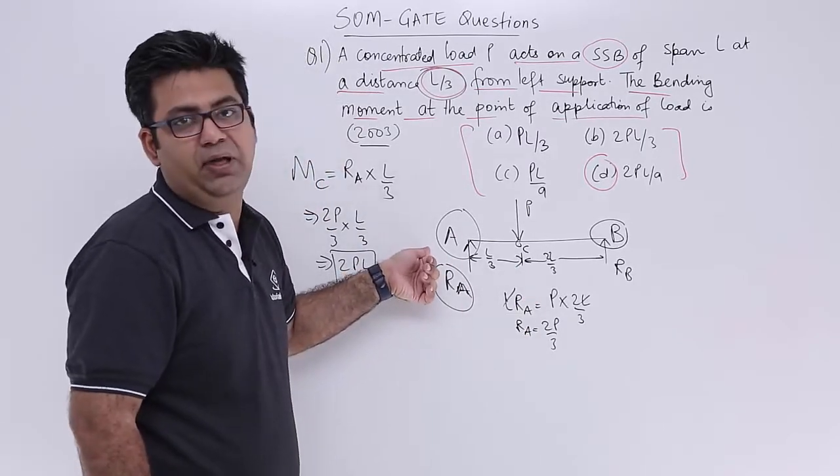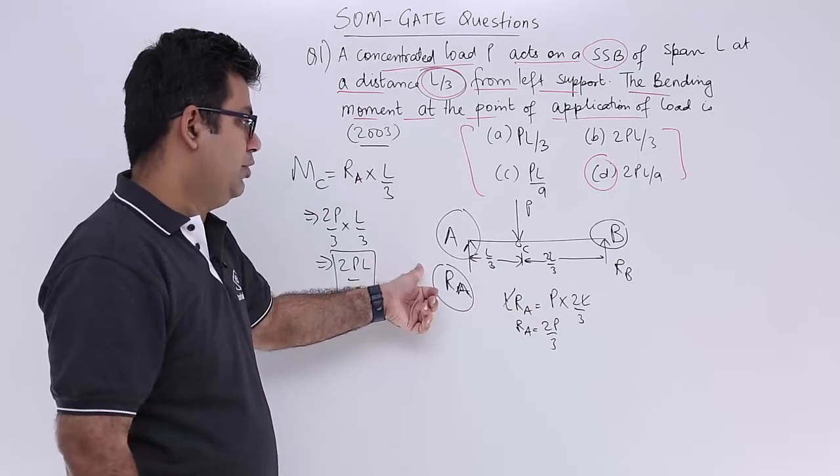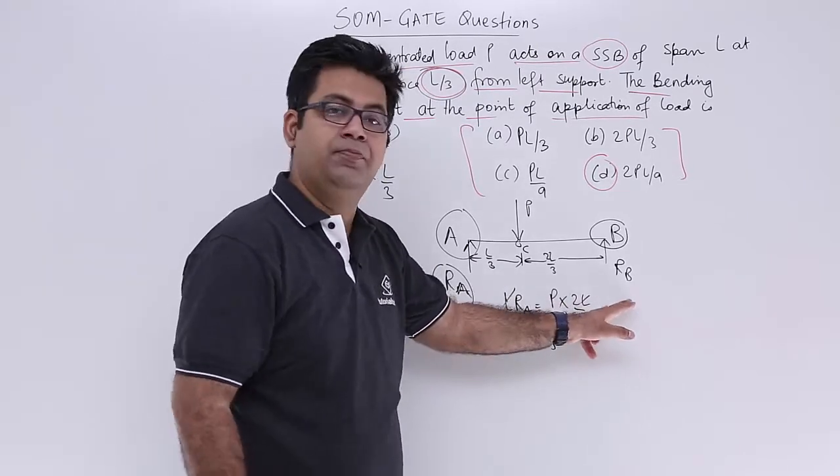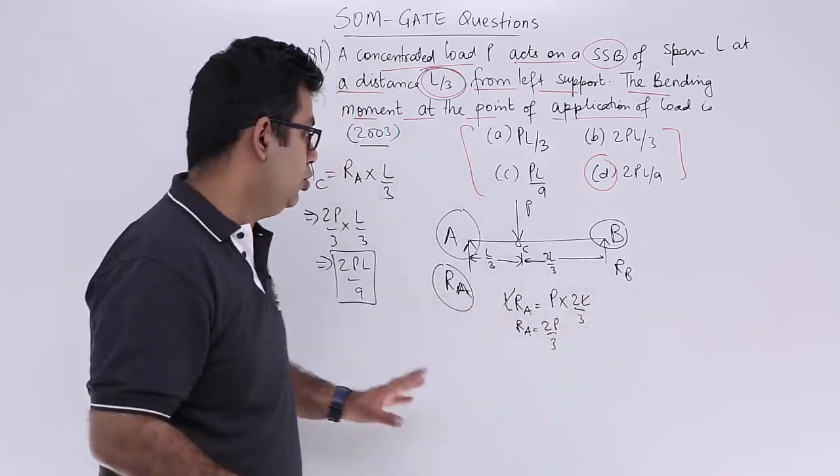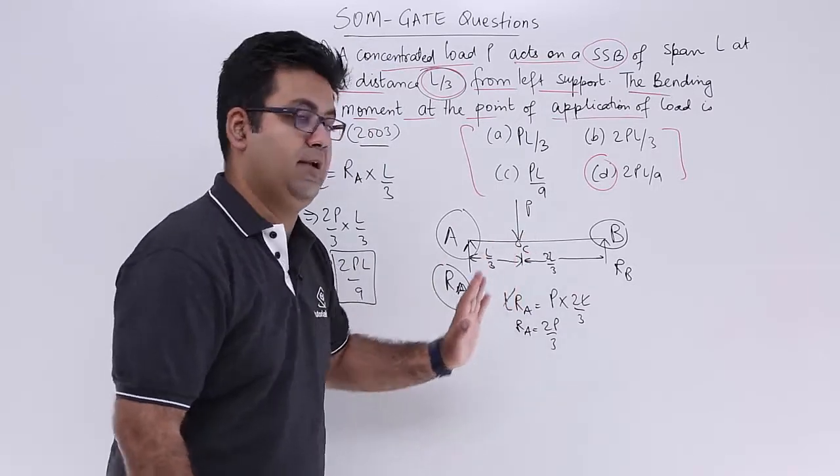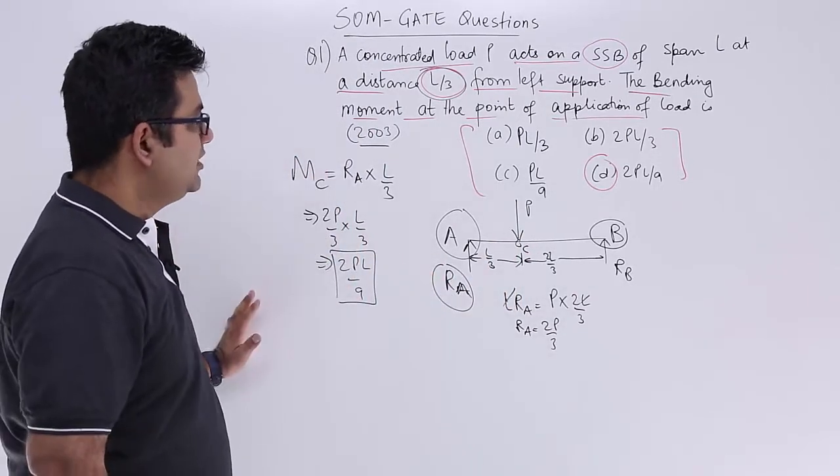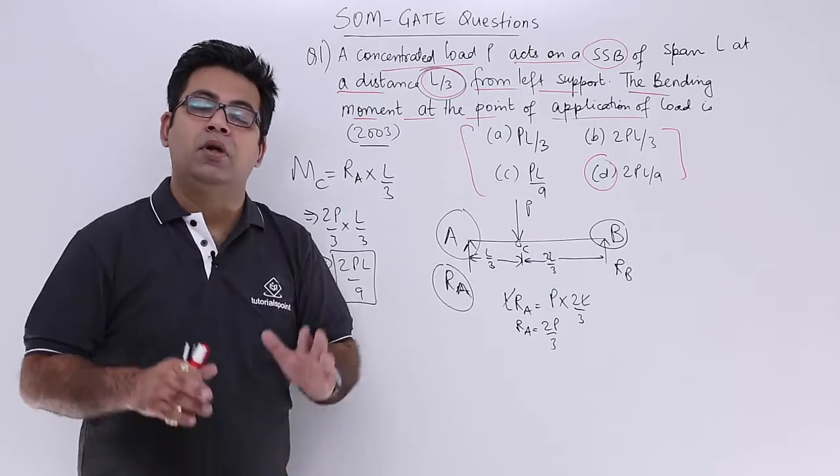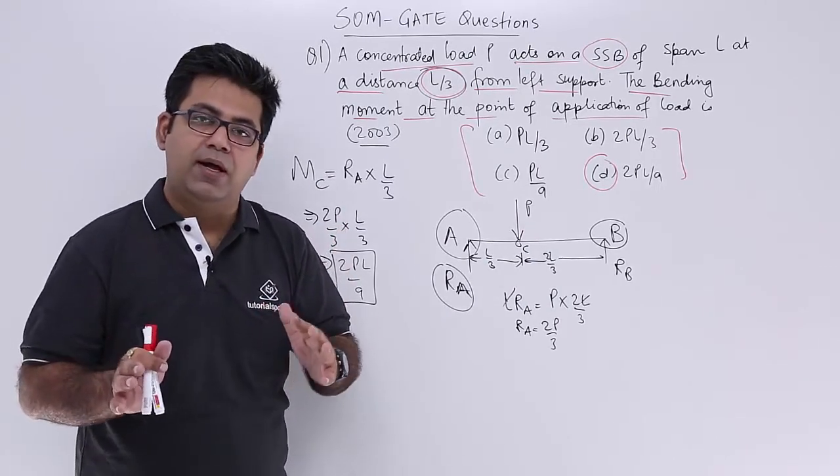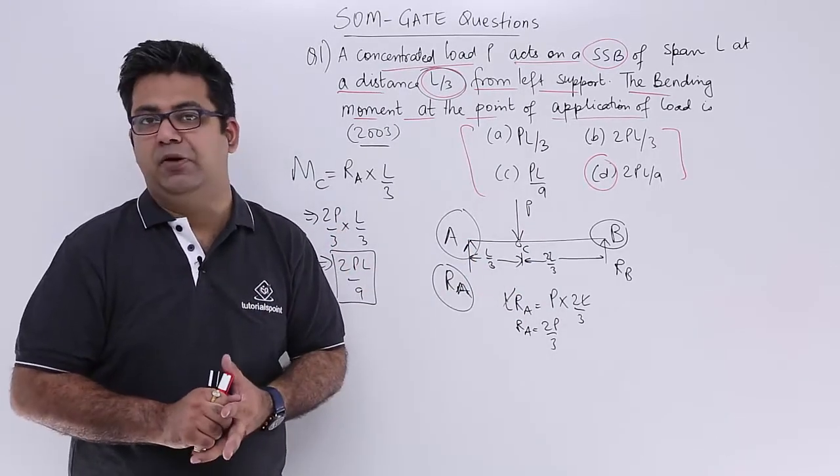So preferably find out the left hand support reaction only. You can also find out this one but just find one of them. Don't waste time in finding out both RA and RB. So this is a very simple question. Now let us move on to question number 2 from another previous GATE question.